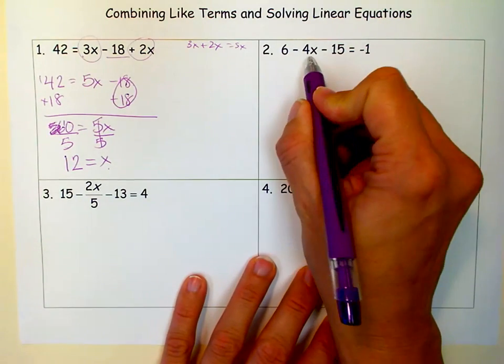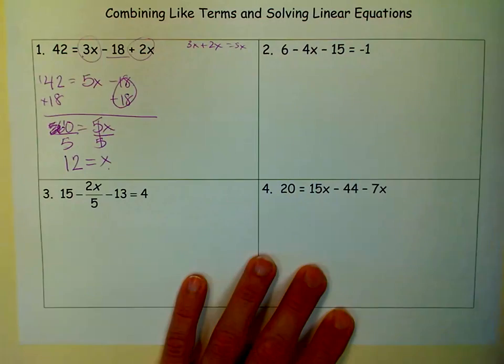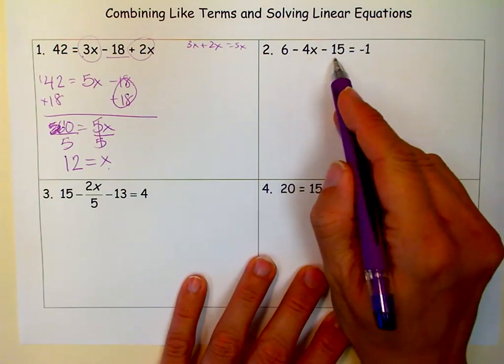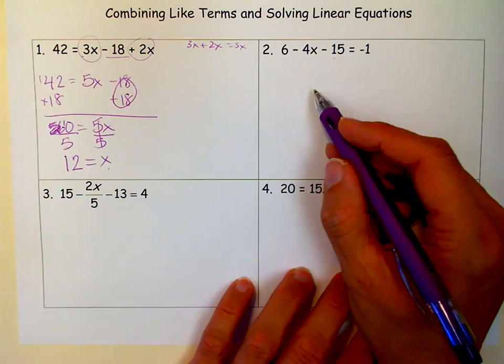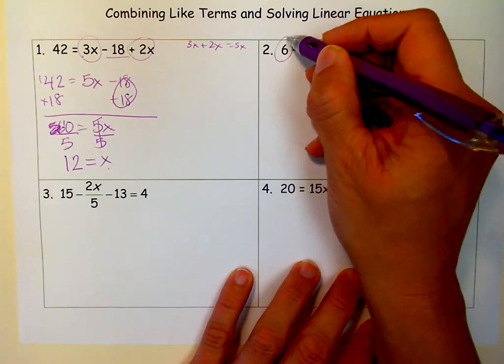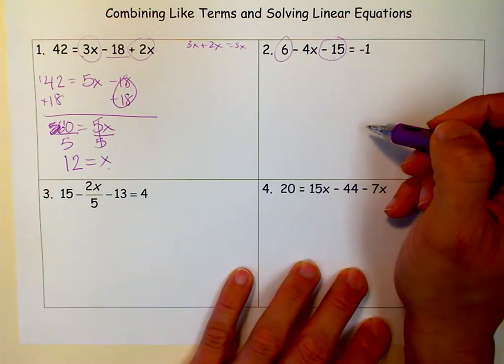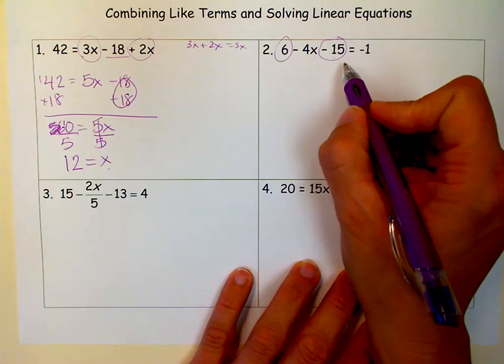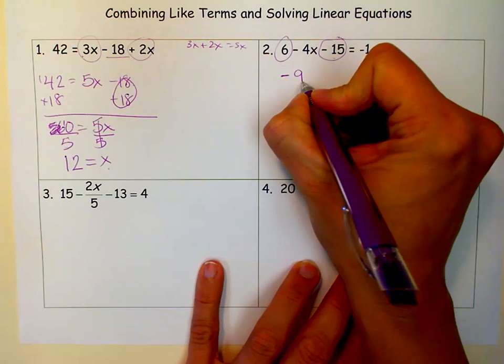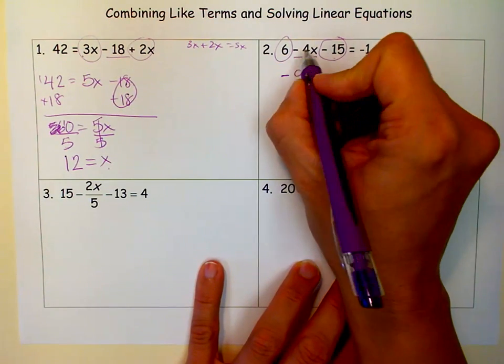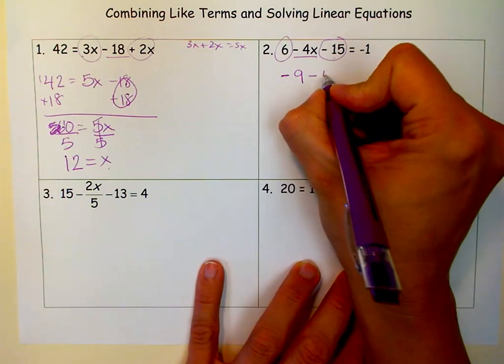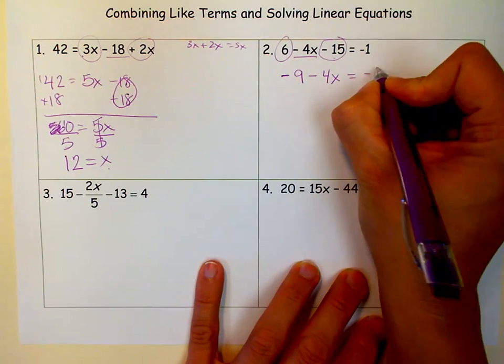So notice that I have a constant term, an x term, and a constant term. Because I have two constant terms on the left side, the same side, then I want to combine them. So I have a 6 and a minus 15. What is 6 minus 15? It's negative 9. And then this is what's left. Don't forget the sign in front of it. It's minus 4x equals negative 1.